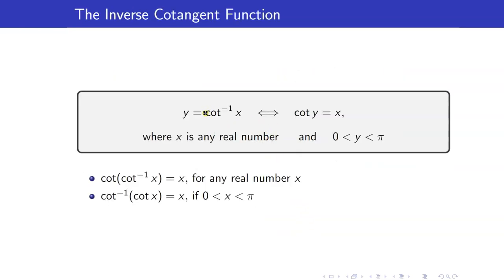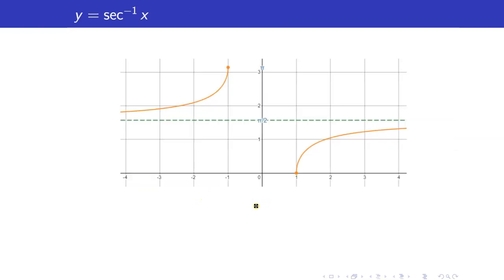Here is the definition of the inverse cotangent function: y is equal to cotangent inverse x if and only if cotangent y is equal to x. The x here is any real number, and the answer to cotangent inverse of a number is an angle between 0 and pi. You can cancel cotangent and cotangent inverse, but for cotangent inverse as the outermost function, the expression must be between 0 and pi, since the answer must be an angle in that interval.